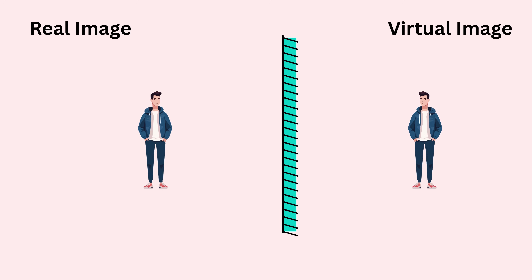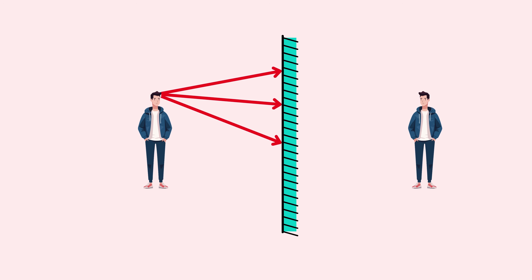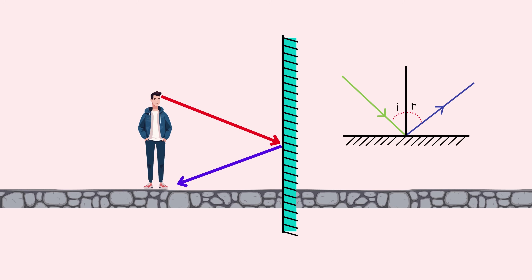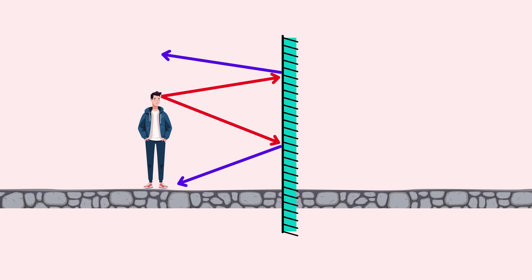To locate the image in a mirror, we use light rays that show how light travels and reflects. We draw two rays from the top of the object, and wherever these rays meet or intersect, the image is formed. For example, we draw a ray from the person's head toward the mirror — it reflects back following the law of reflection. Then we draw another ray, extend both reflected rays backward, and they appear to meet behind the mirror, which is where the image of the head is formed.